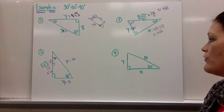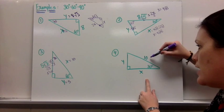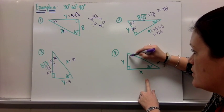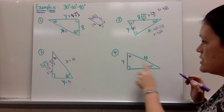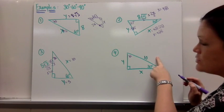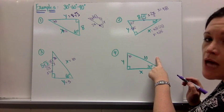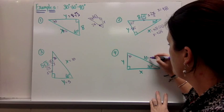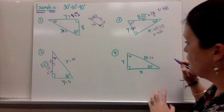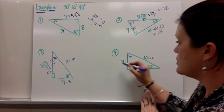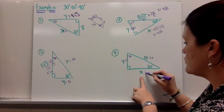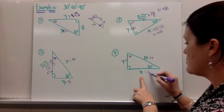For number 4, you're given the hypotenuse and need to find the short side and the middle side. The hypotenuse is 2 times the short side, so dividing by 2 gives the short side equal to 5. The side across from 60 degrees will be 5 square root 3.